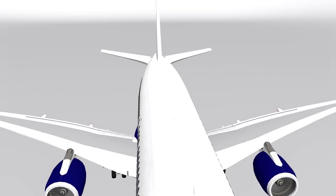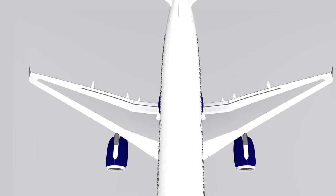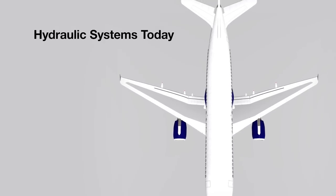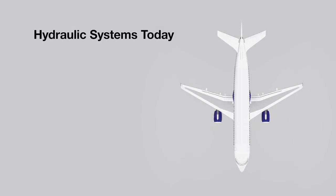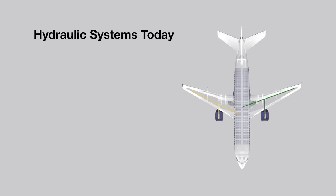This is the aircraft hydraulic architecture of today. Central hydraulic systems are routed through the whole aircraft to power all consumers, which means high installation complexity and considerable weight.